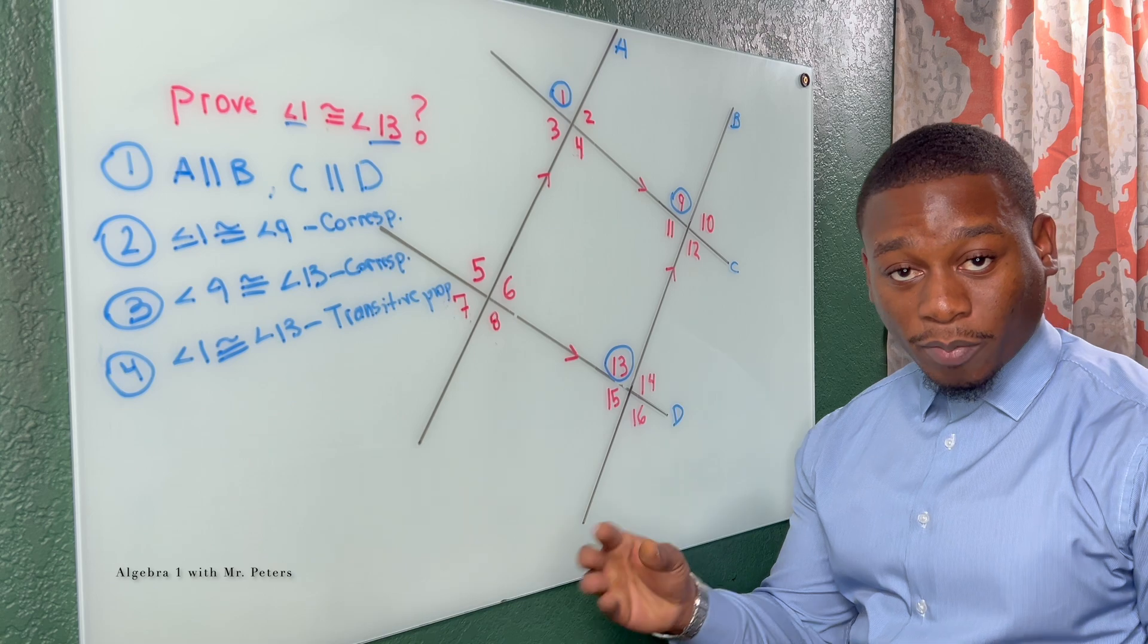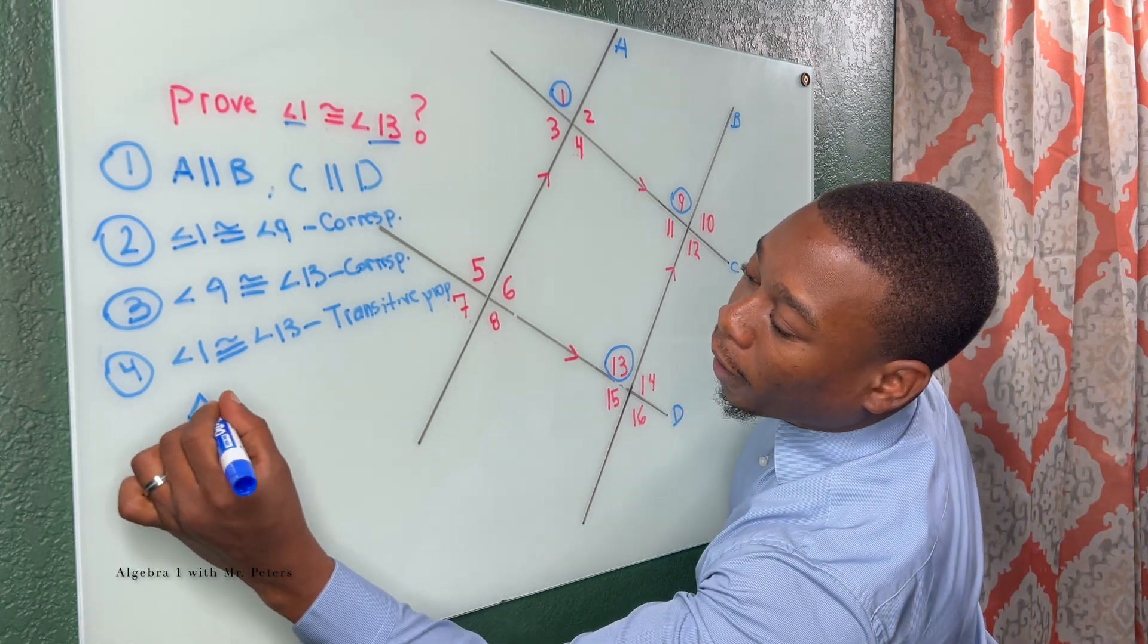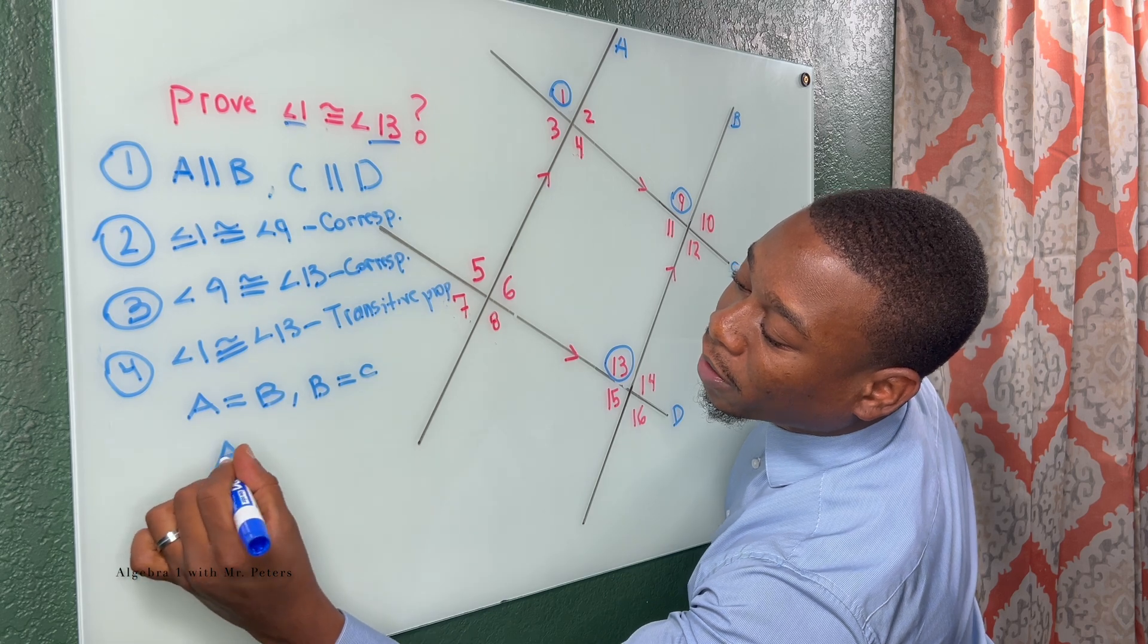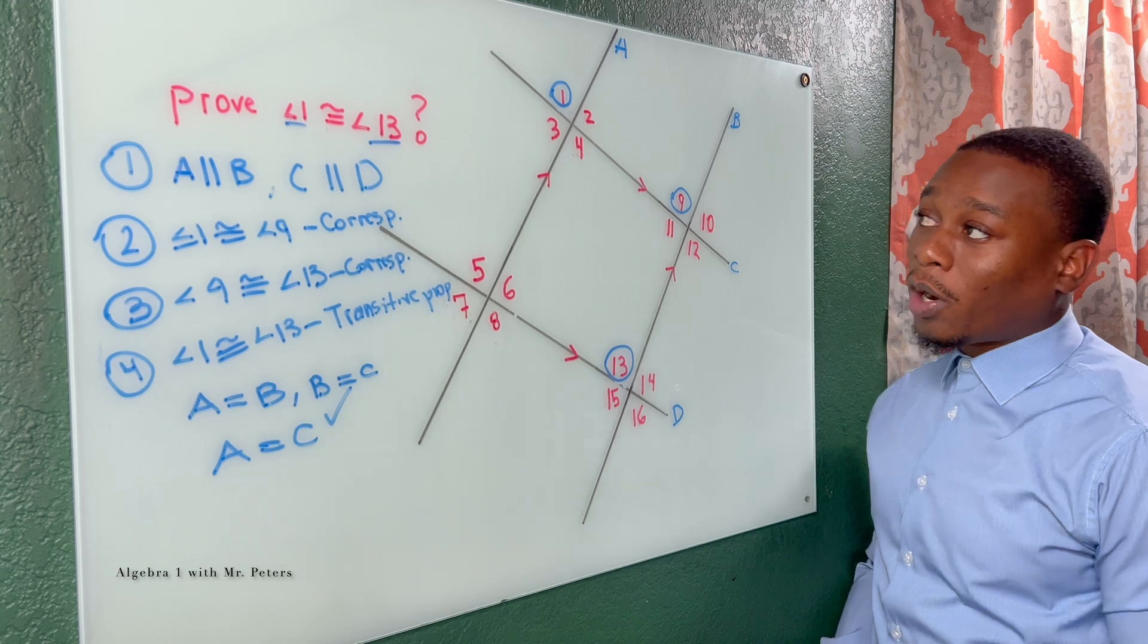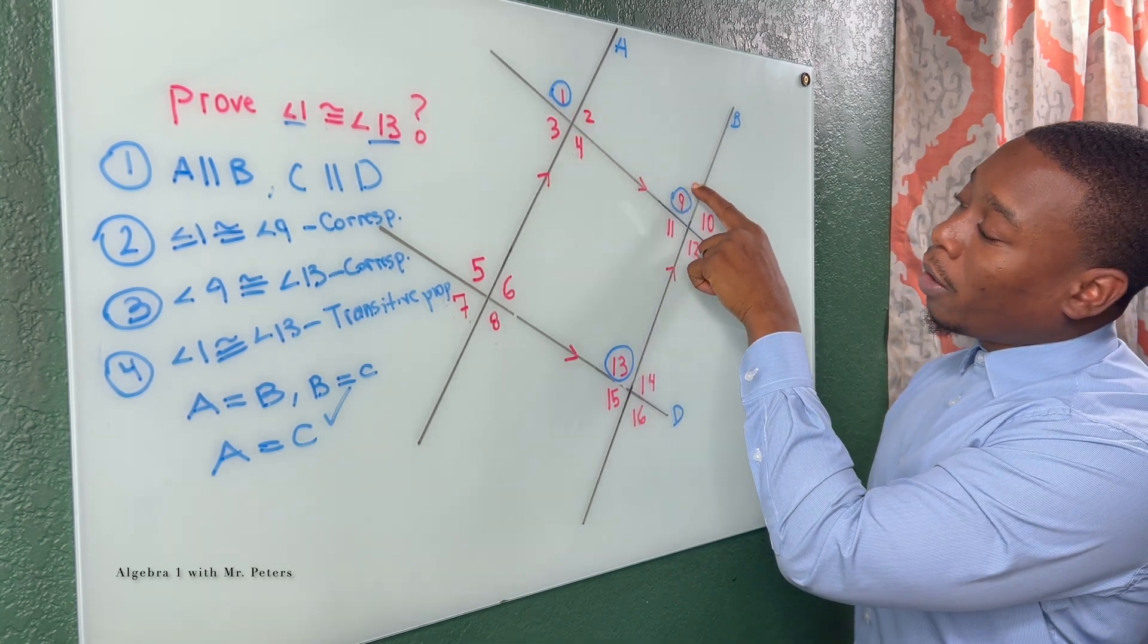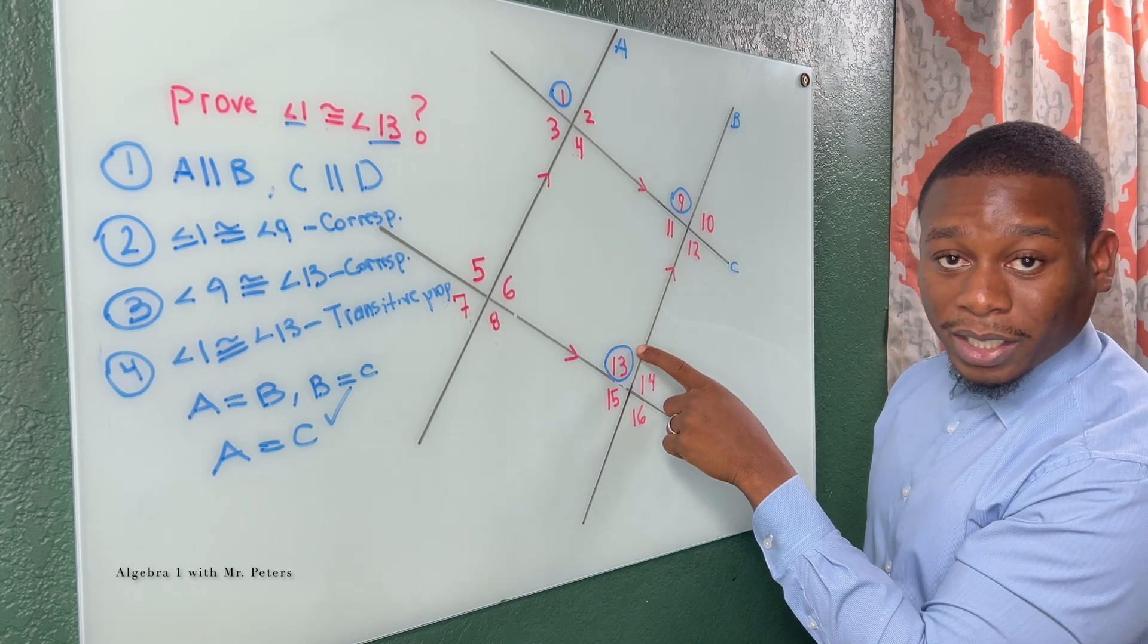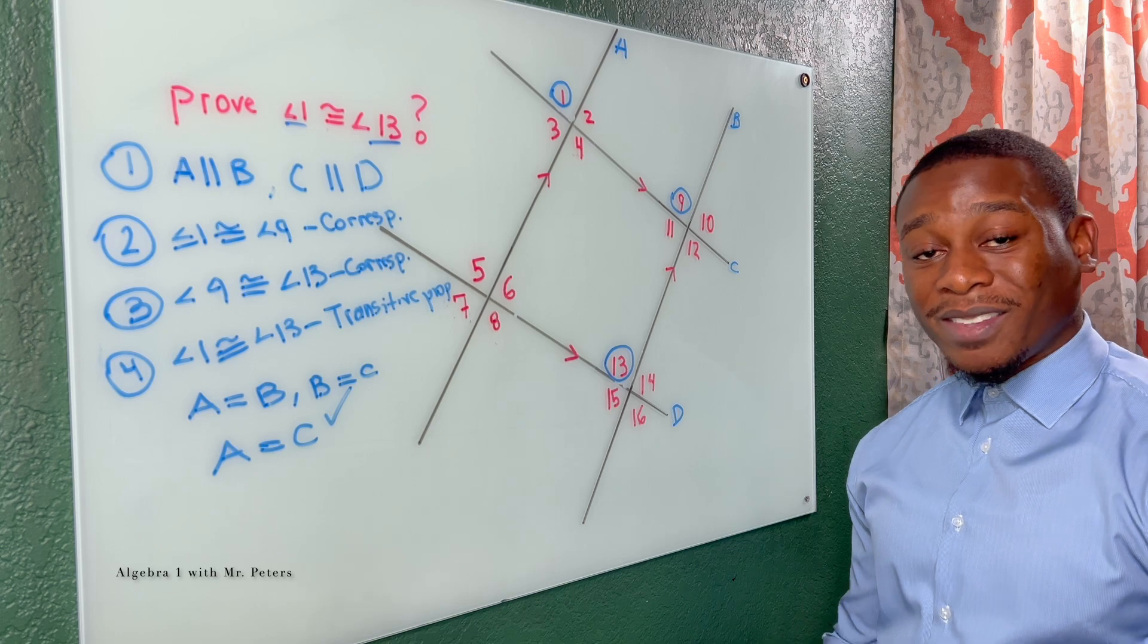So what exactly is a transitive property before we wrap this video up? If A is equal to B and B is equal to C, then that means A is equal to C. What does this mean in this problem? If A, angle 1, is equal to angle 9, which is B, and angle 9, which is B, is equal to angle 13, which is C, then that means angle 1 and angle 13 must be the same.